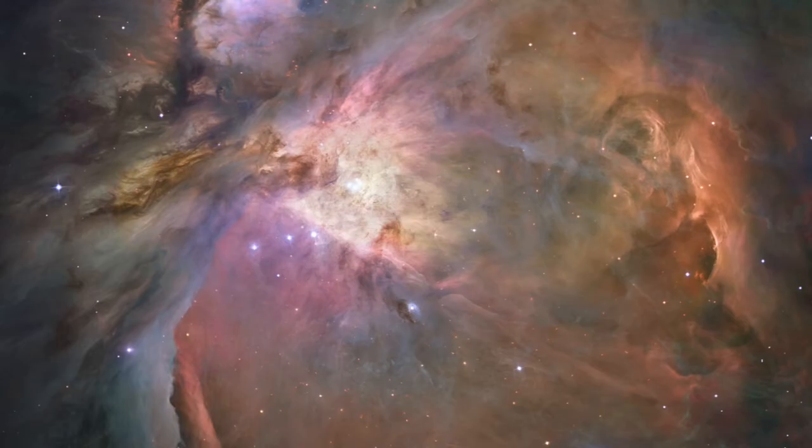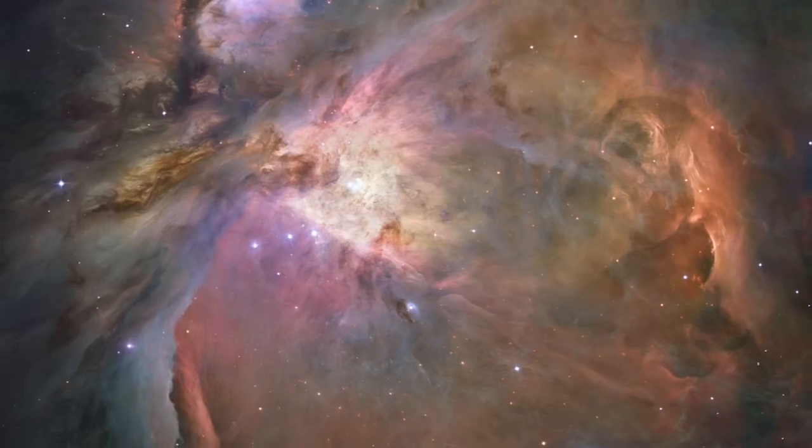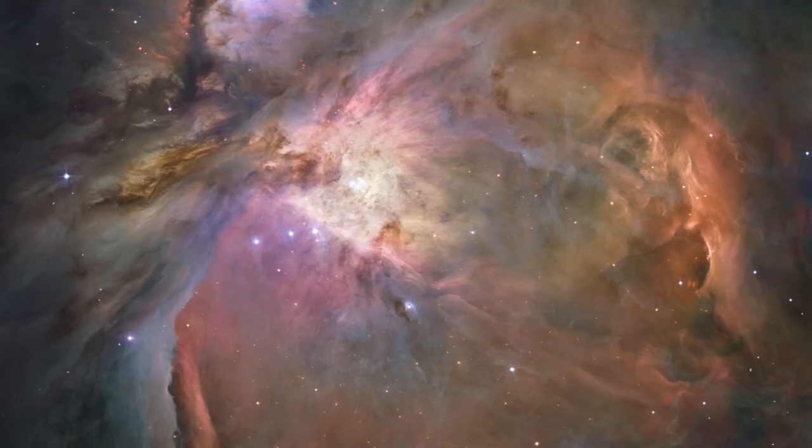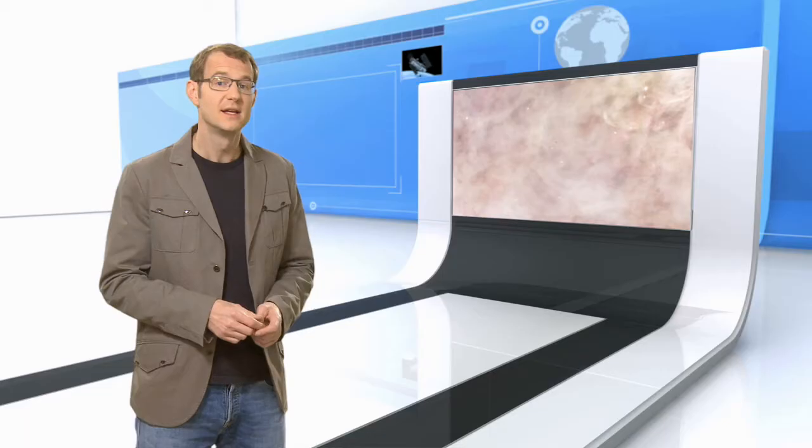The sharpest image ever taken of the Orion Nebula was released in 2006. This image, from Hubble's Advanced Camera for Surveys, shows more than 3,000 stars of various sizes, some of which had never before been seen in visible light. Now looking at the frenzied mixture of gas and swirling dust, it's pretty clear that a lot is going on inside the Orion Nebula.